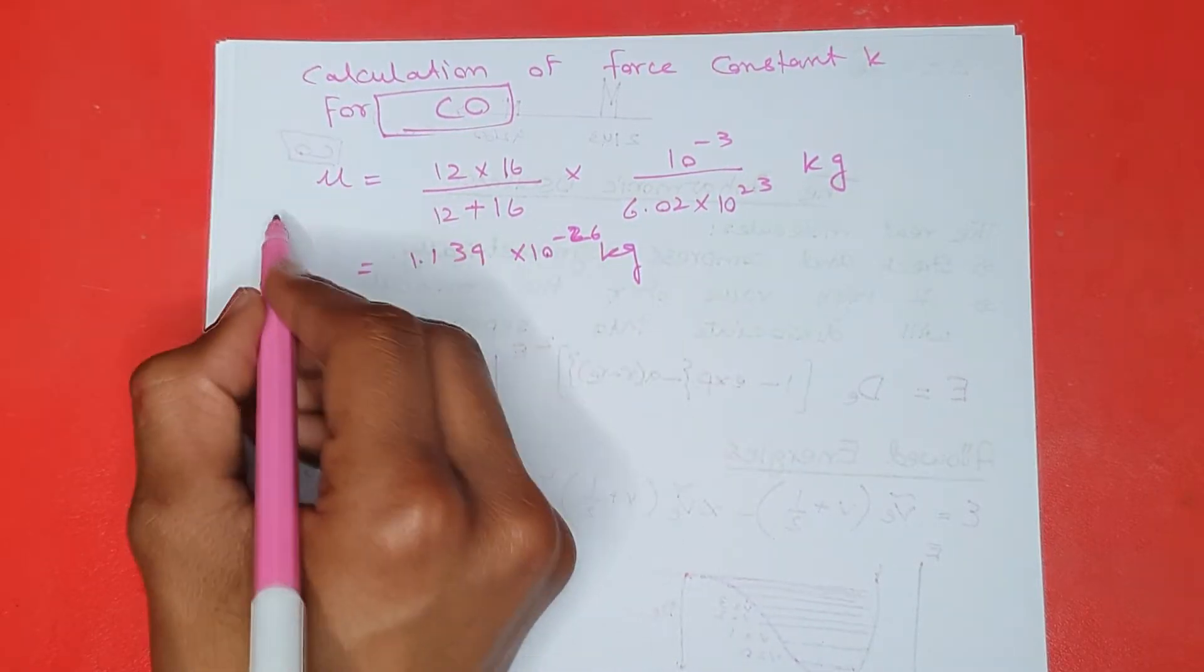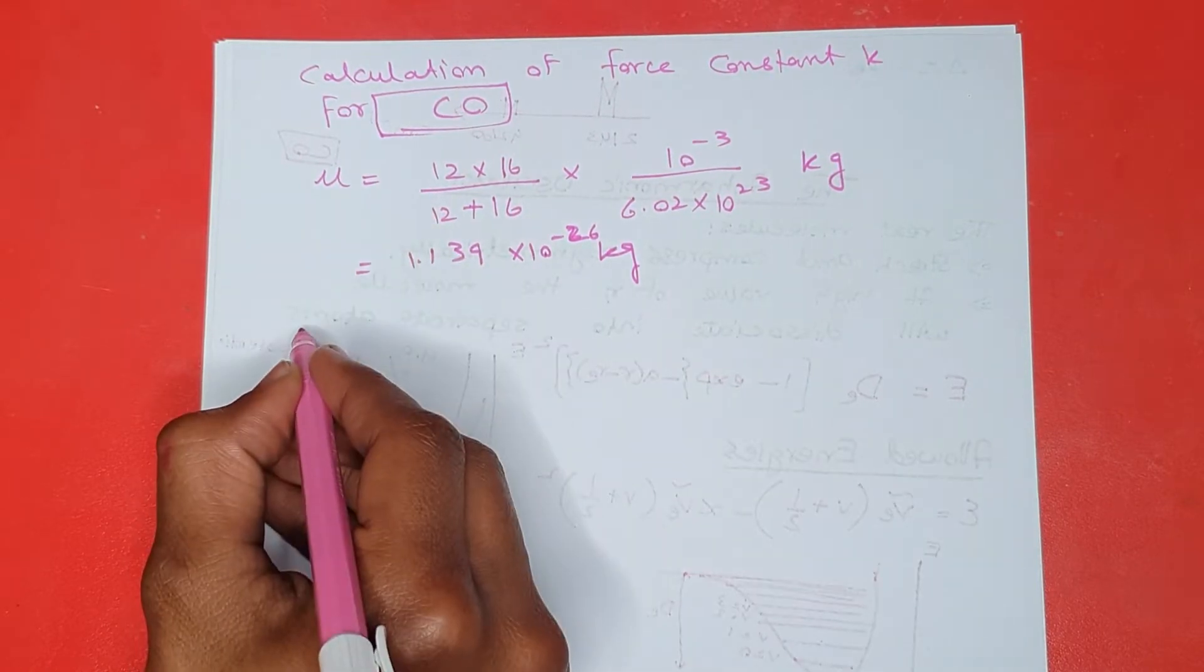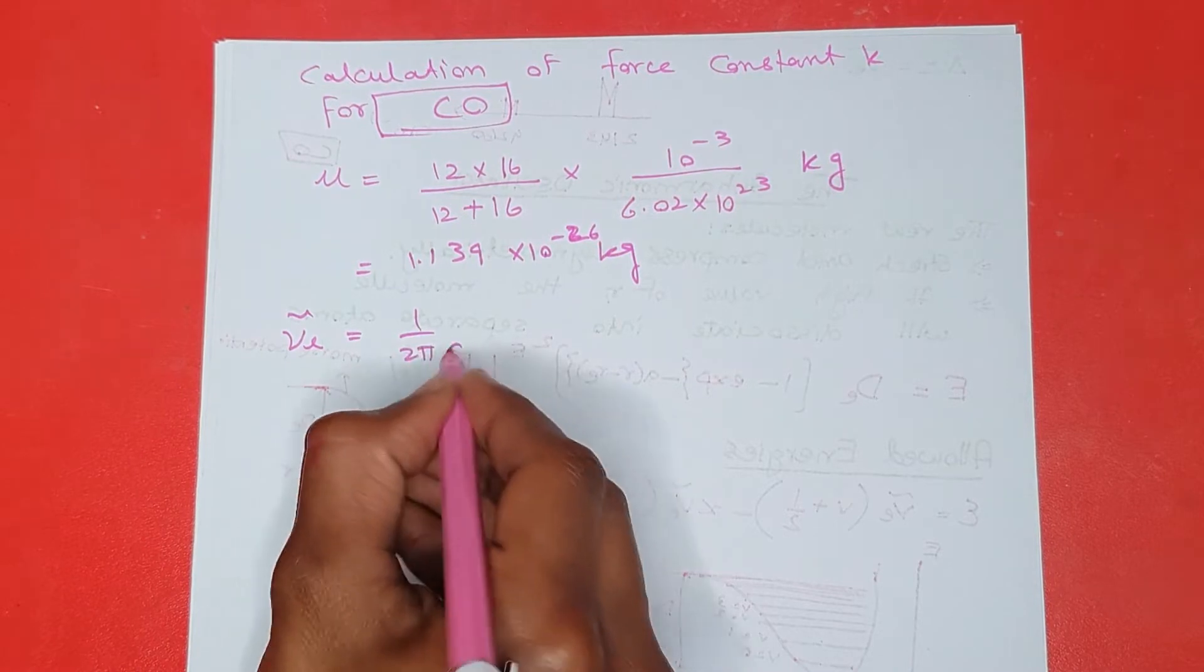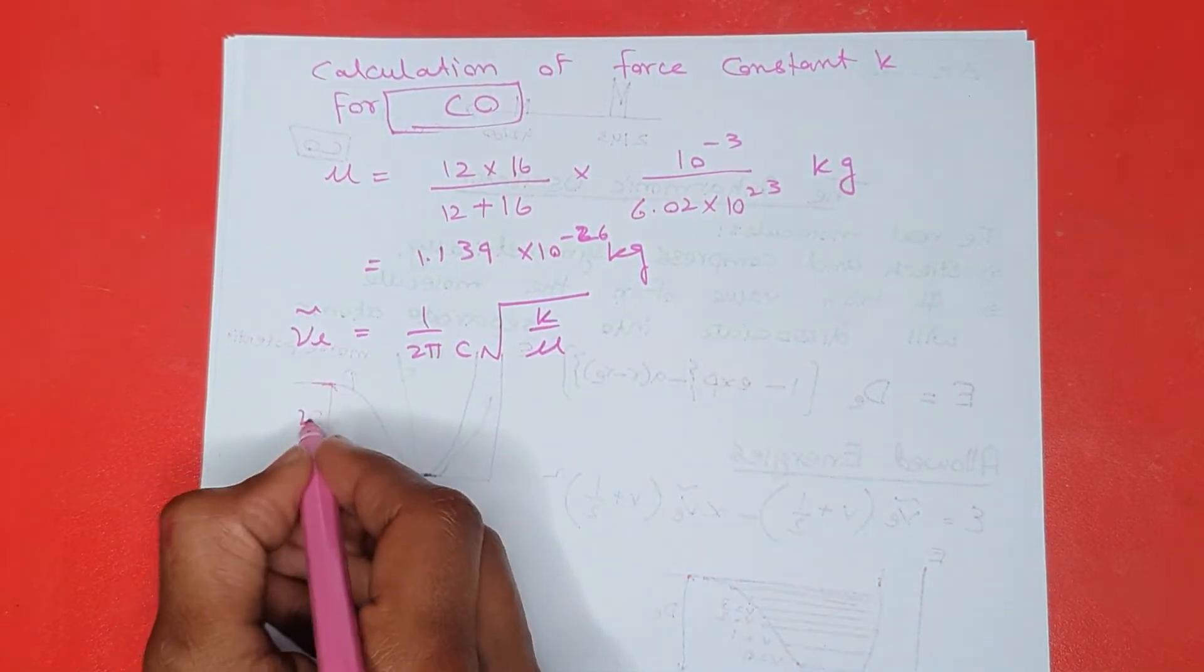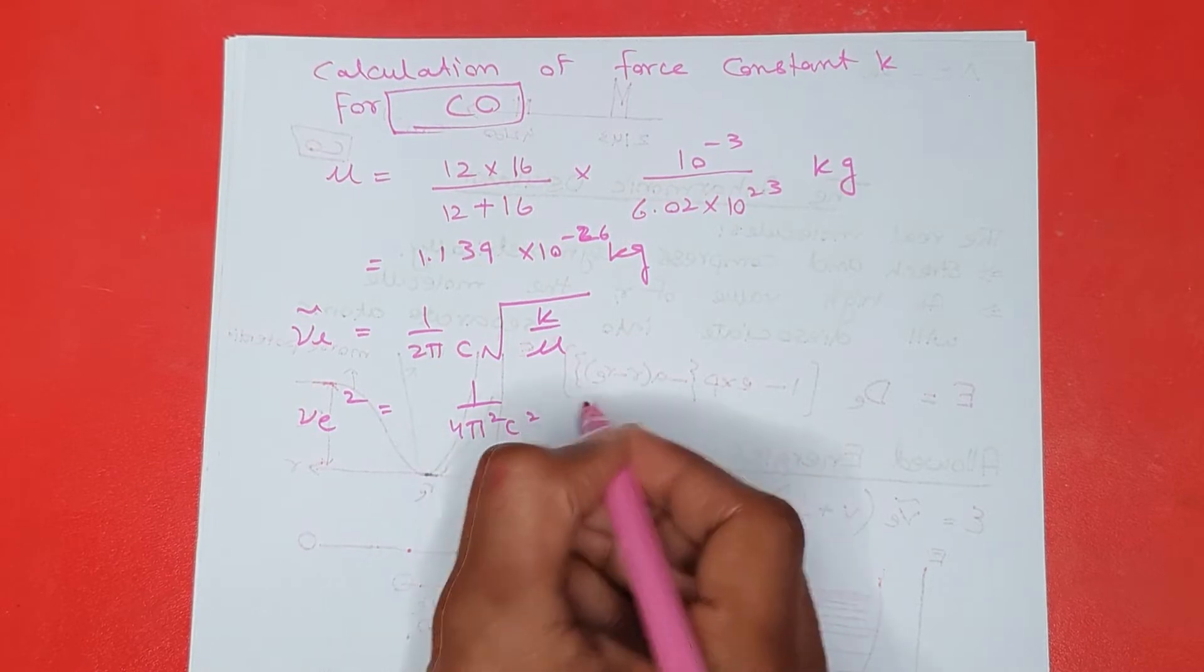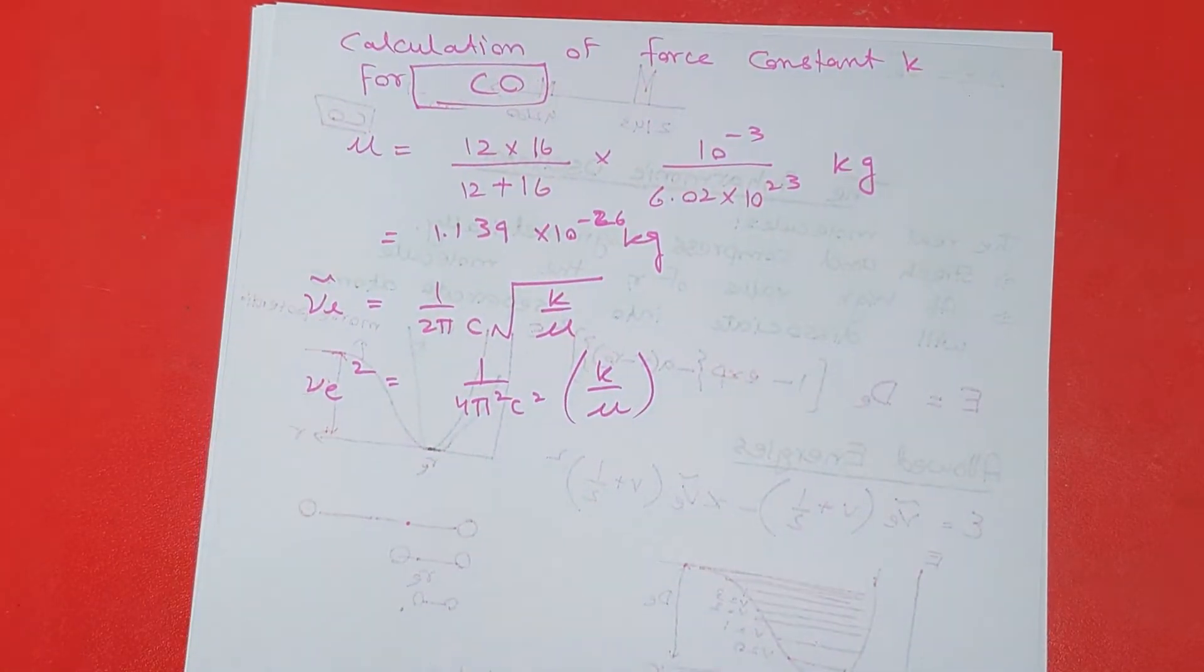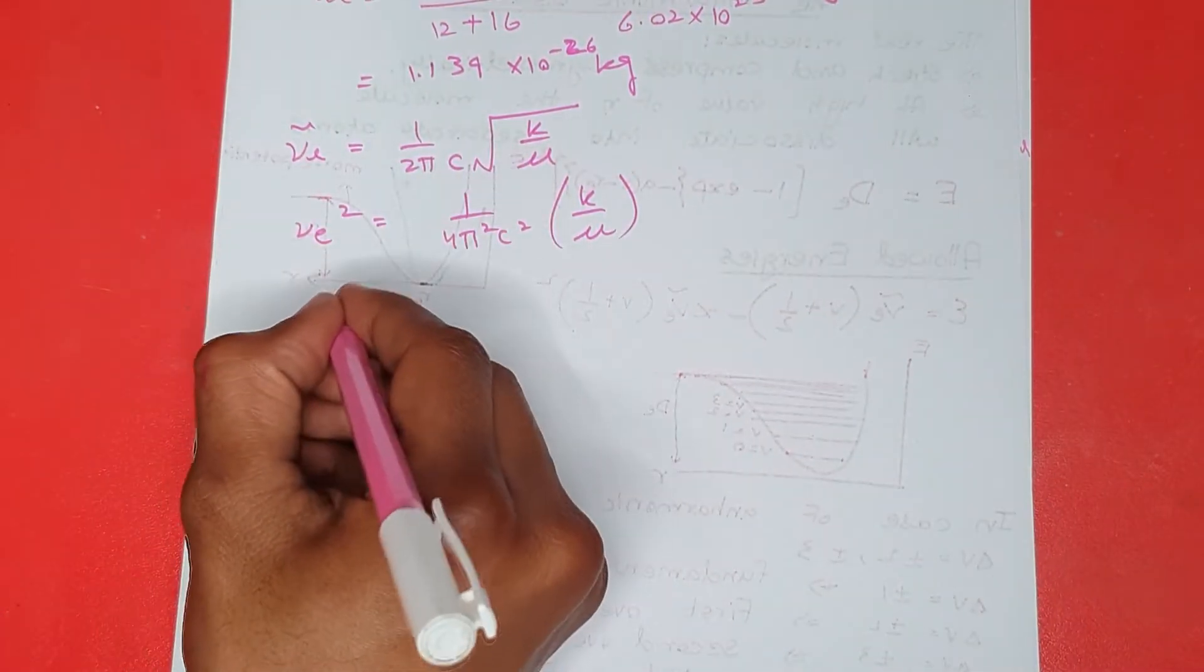This is my value for reduced mass of carbon monoxide. If I have the value for the wave number to be equal to 1 over 2 pi C under root K over mu, taking square on both sides becomes VE squared 1 over 4 pi squared C squared K over mu. What I have to do is find the value for K, so this mu will go here, this will go here.